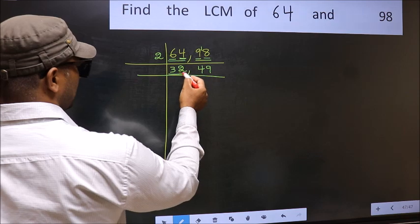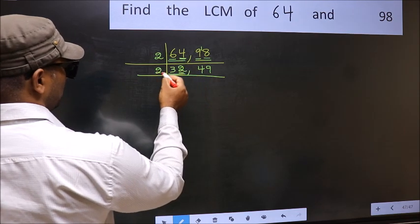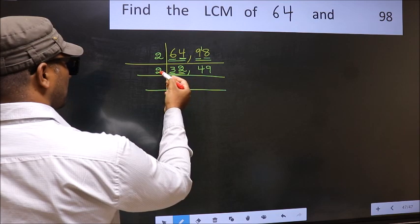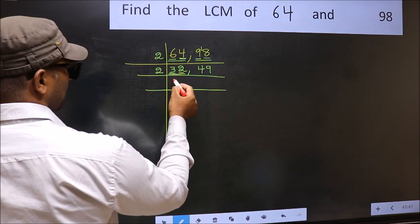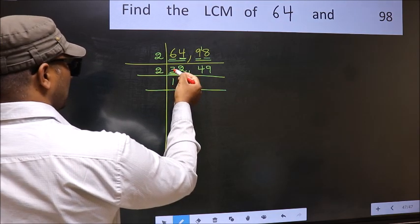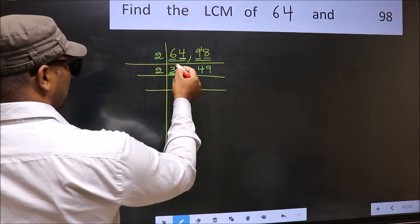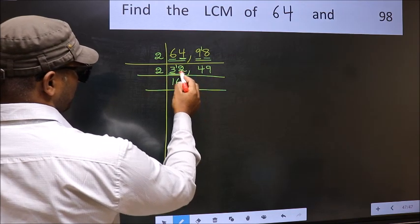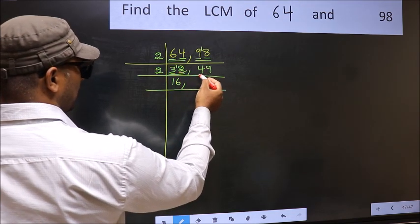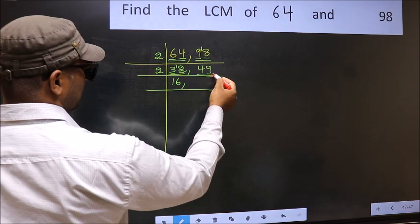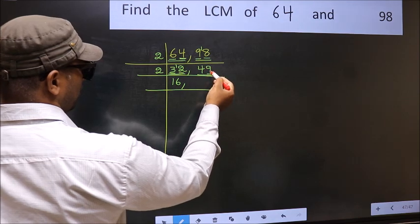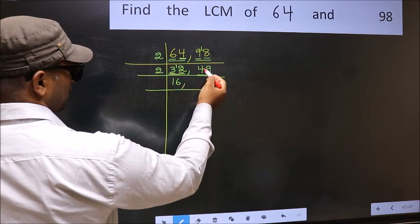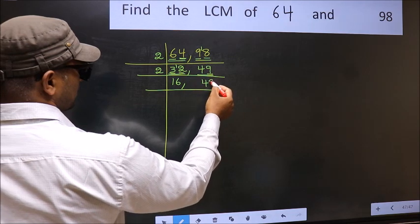Now 32: last digit 2, which is even, so take 2. The first digit is 3 — a number close to 3 in the 2 table is 2, so 3 minus 2 is 1, carry 1 forward to get 12. When do we get 12 in the 2 table? 2 times 6 is 12. Now the other number, 49: last digit 9, which is not even, so 49 is not divisible by 2. Write it down as it is.